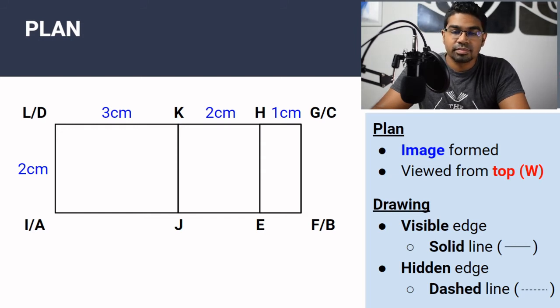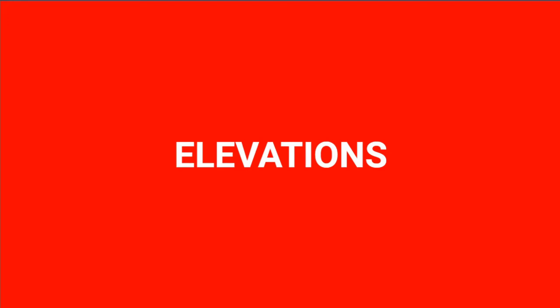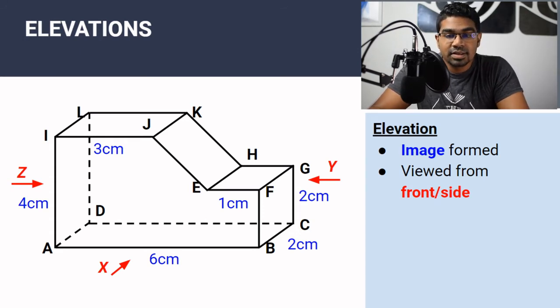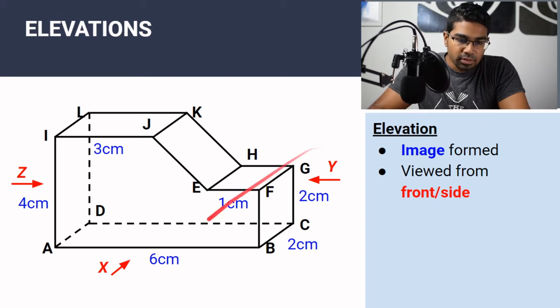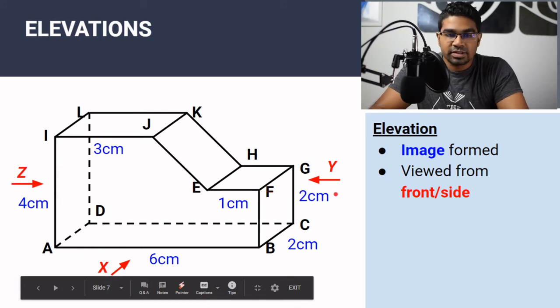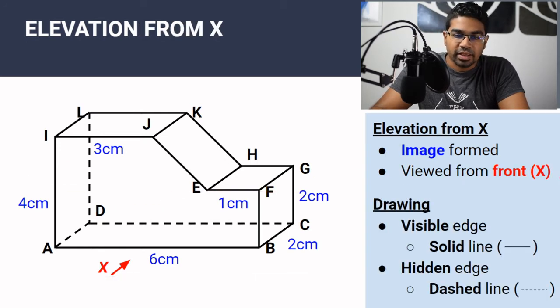Now what about elevations? Elevations, similar to a plan, is a drawing — but this time not from the top. It can be from the front or from the sides. So elevation is an image when it's viewed from the front or the sides. X is from the front; Y and Z are from the sides. Let's take a look at elevation from X first.